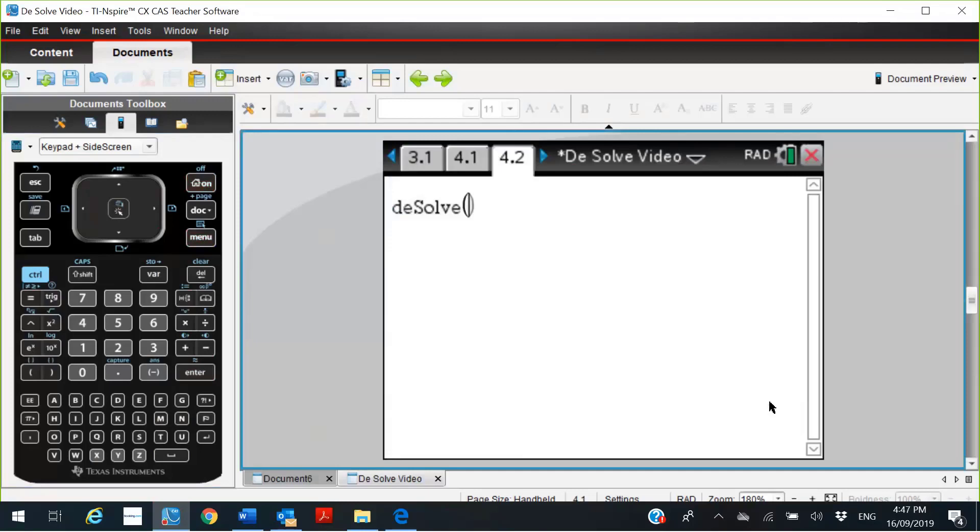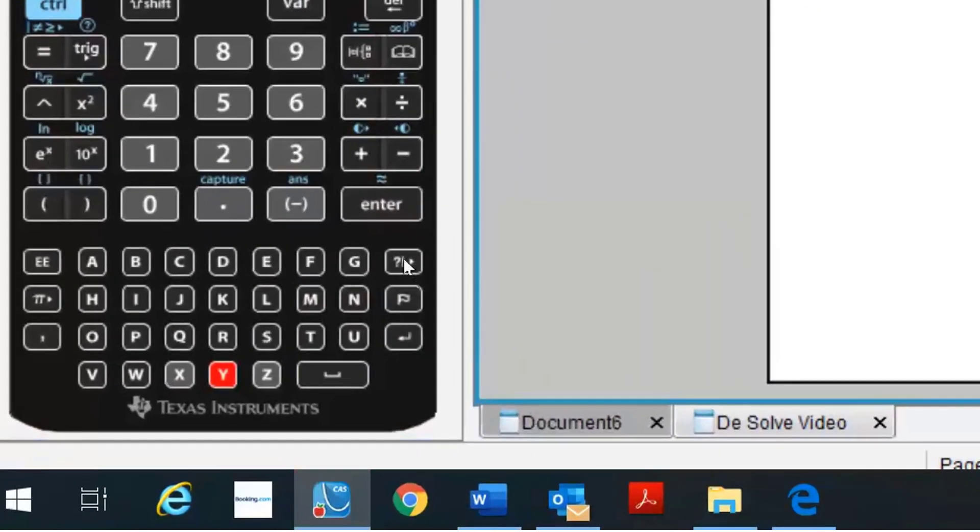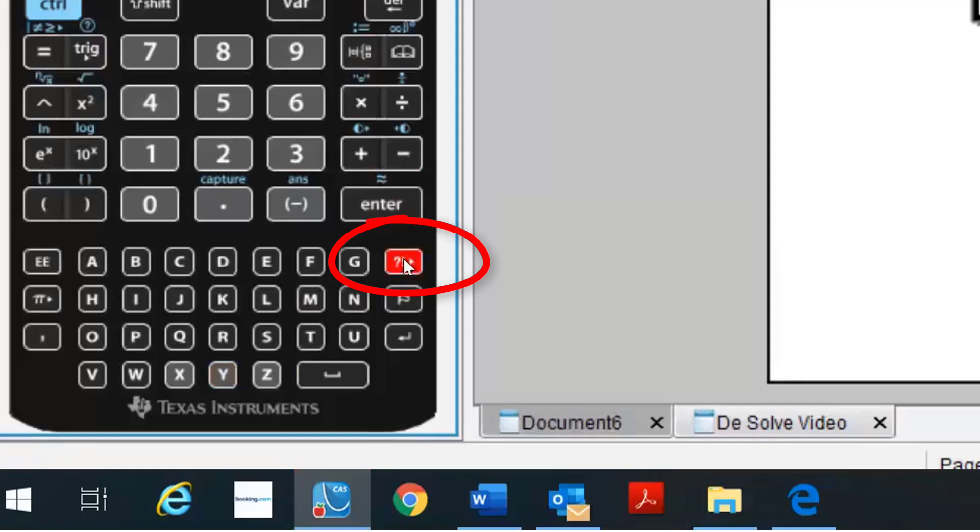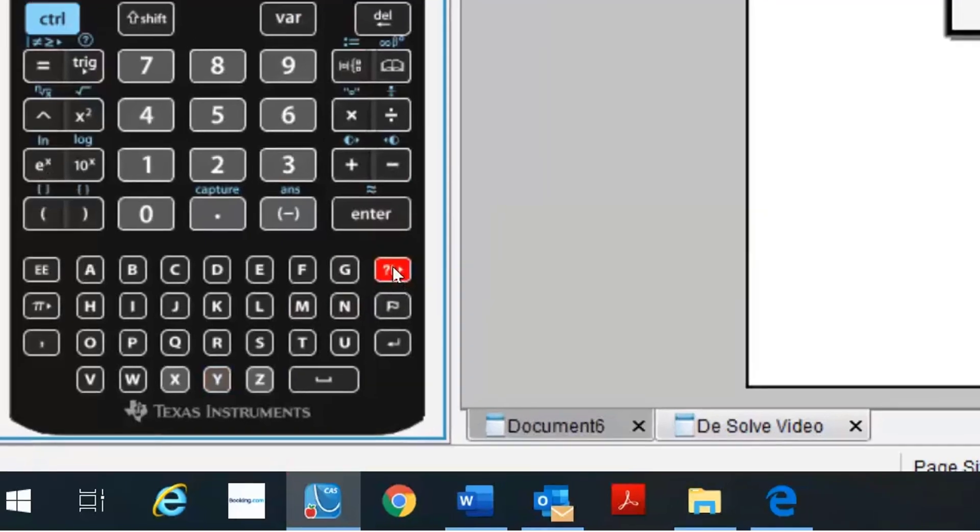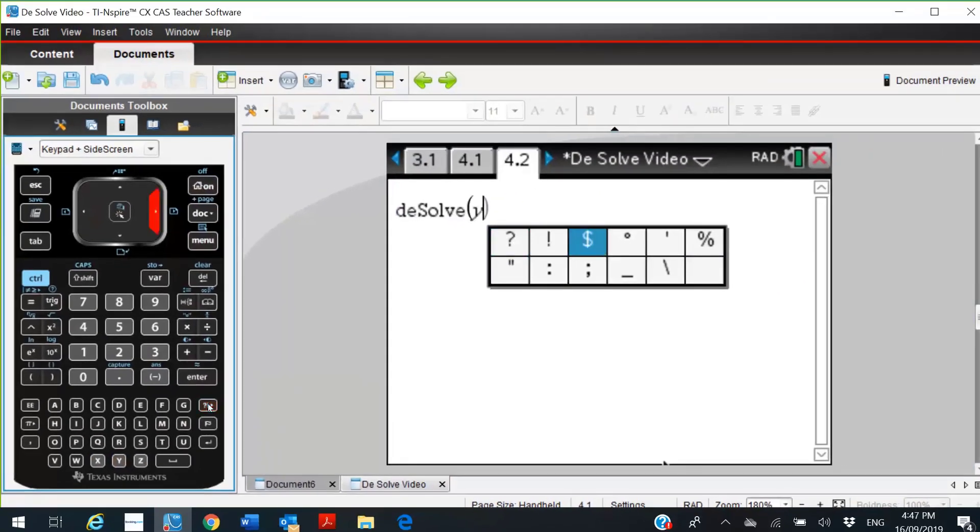So DE solve. Now we're going to solve DE solve y dashed—to get the dashed you're going to have to go down to the template under the enter sign and scroll across until you get the little dashed command. So DE solve y dashed equals 3 times y, comma independent variable x, comma dependent variable y.